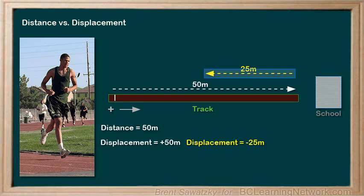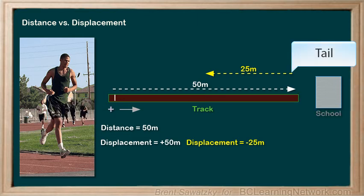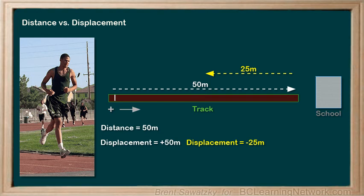If we add these two displacements together — that is, follow the arrows from tail to head, then tail to head — we end up with a total displacement of plus 25 meters. That is, Dylan's displacement at this point is exactly 25 meters towards the school.